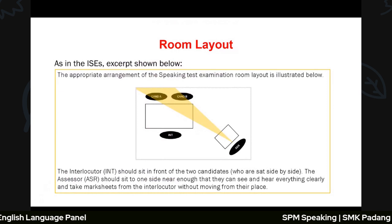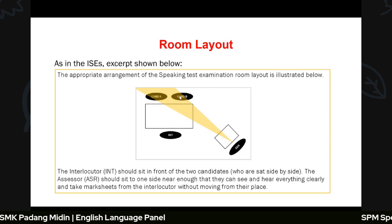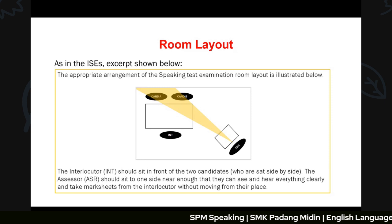The room layout shows the interlocutor sitting in front of you, maintaining about one meter distance for SOPs. Candidate A and Candidate B sit facing the interlocutor, and the assessor sits slightly behind the interlocutor.